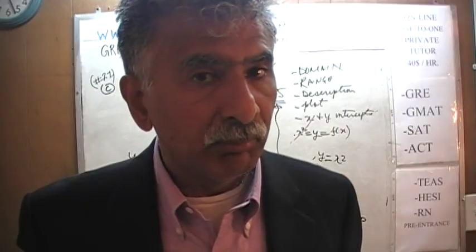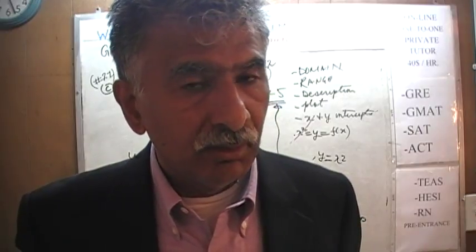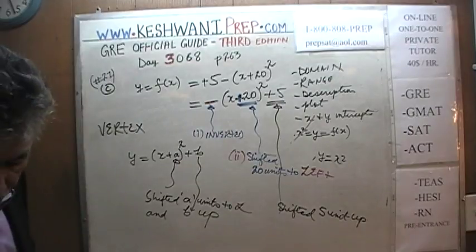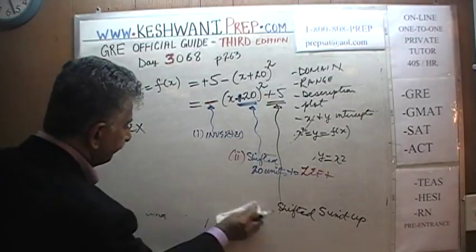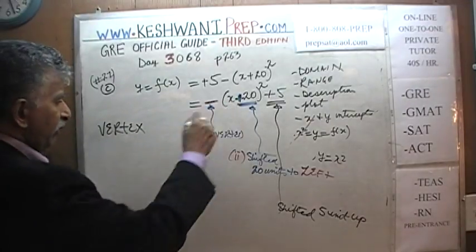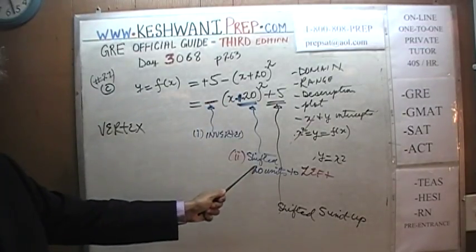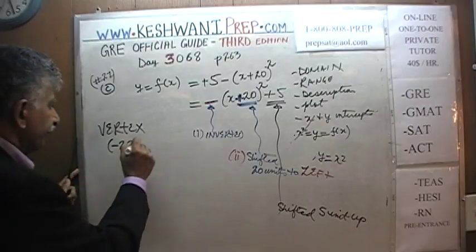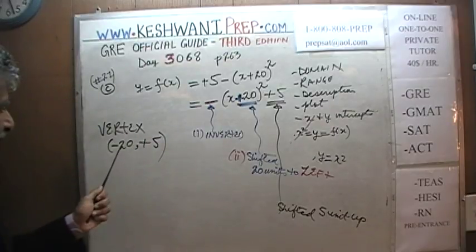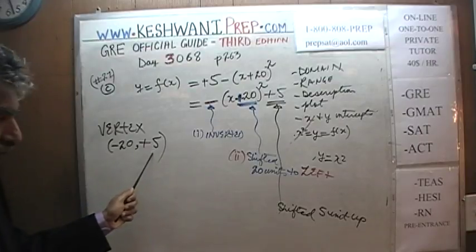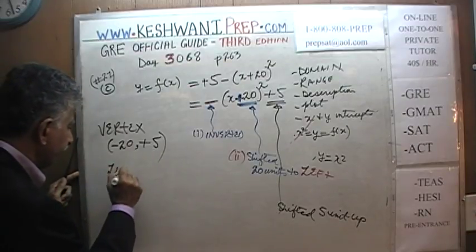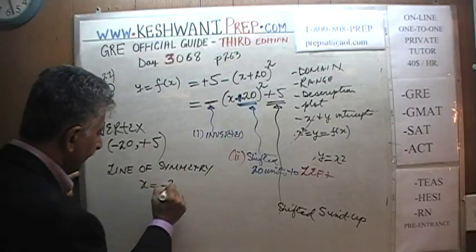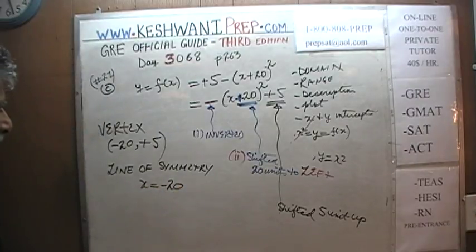The positive 20 and positive 5 tell us where the parabola is sitting. The point where the parabola sits is called the vertex. The vertex of this parabola is at negative 20 and positive 5 — shifted 20 units to the left, 5 units up. So the vertex is at (−20, 5).